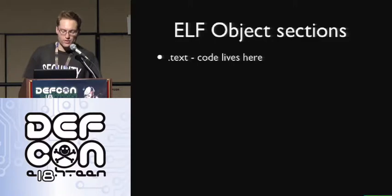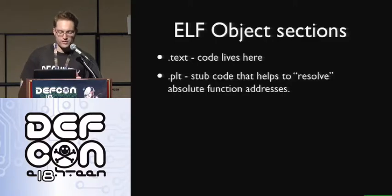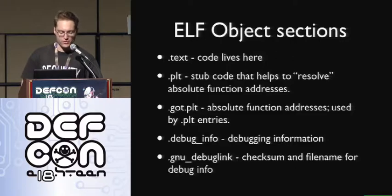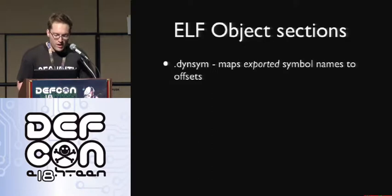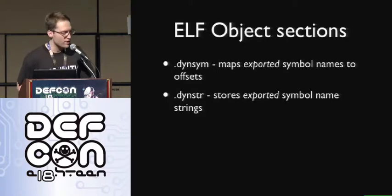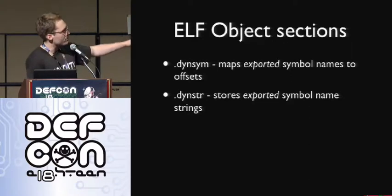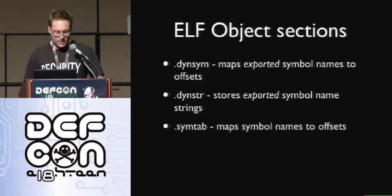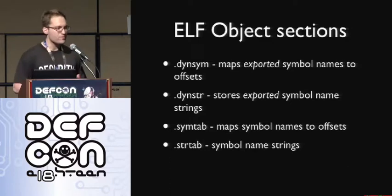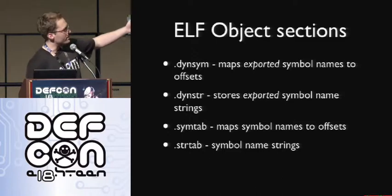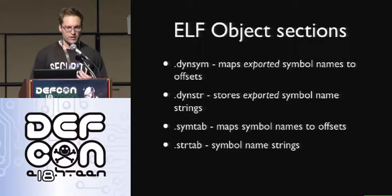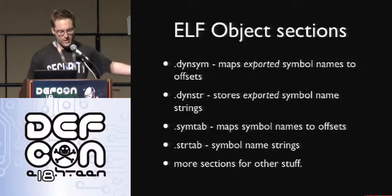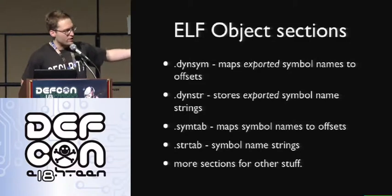A couple sections that are important to know about: you have the text section where code lives, the PLT section which is stub code that helps to resolve absolute function addresses, and the GOT.PLT where absolute function addresses are stored and used by the PLT entries. There are also debugging sections — debug_info and GNU debug_link. The DYNSYM and DYNSTR sections are used for dynamic linking: DYNSYM creates a mapping between exported symbol names and offsets, and DYNSTR stores the actual symbol names. The SYMTAB and STRTAB are supersets of that information, including local variables and other symbols not exported, useful for debugging. There are also sections for stack unwinding and exception handling.